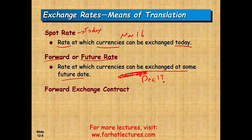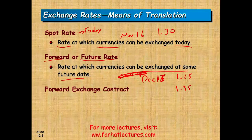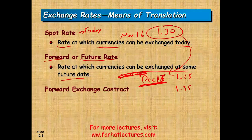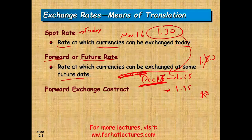The forward or future rate is the rate at which currencies can be exchanged at some future date. For example, if the euro today is $1.30, I can look up the forward rate for December 16th — one month from now. The forward rate might be $1.25 or $1.35. If you know you'll need to pay your German supplier in euros a month from now, you don't want to wait because the euro could be $1.50 or $0.90. So you might buy something in the forward market to lock in your rate — paying a fee so someone guarantees you can purchase euros at, say, $1.28 on that future date.